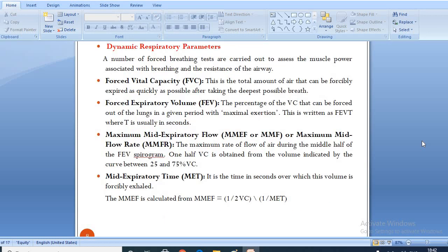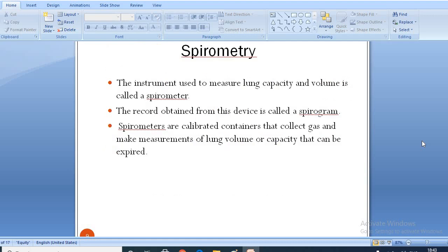A number of forced breathing tests are carried out to assess the muscle power associated with breathing and the resistance of the airway. These are forced vital capacity, which is the total amount of air that can be forcibly expired as quickly as possible after taking the deepest possible breath. Forced expiratory volume is the percentage of the VC that can be forced out of the lungs in a given period with maximal exertion. Maximum mid expiratory flow is the maximum rate of flow of air during the middle half of the FVC spirogram. Mid expiratory time is the time in seconds of airway.